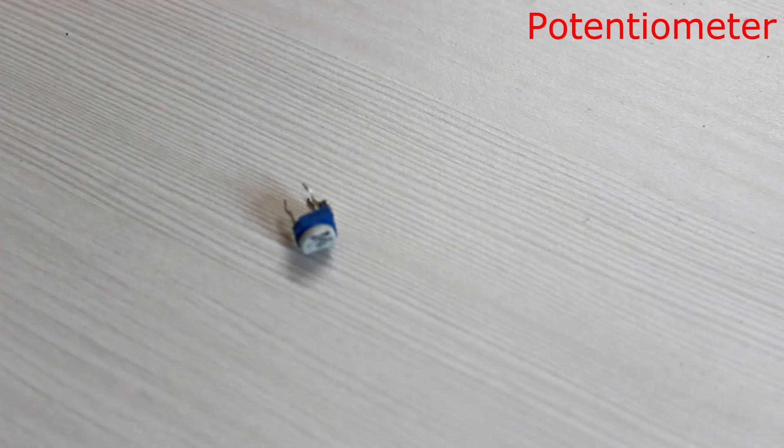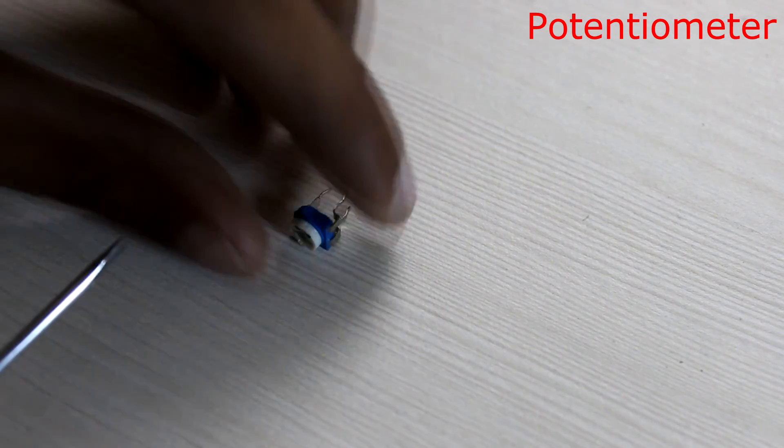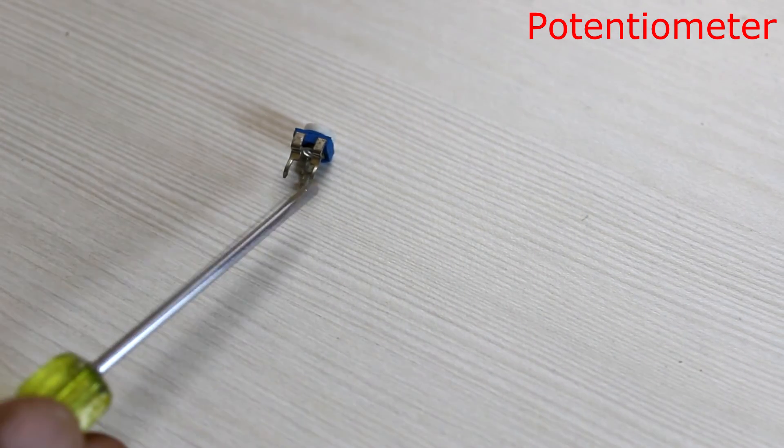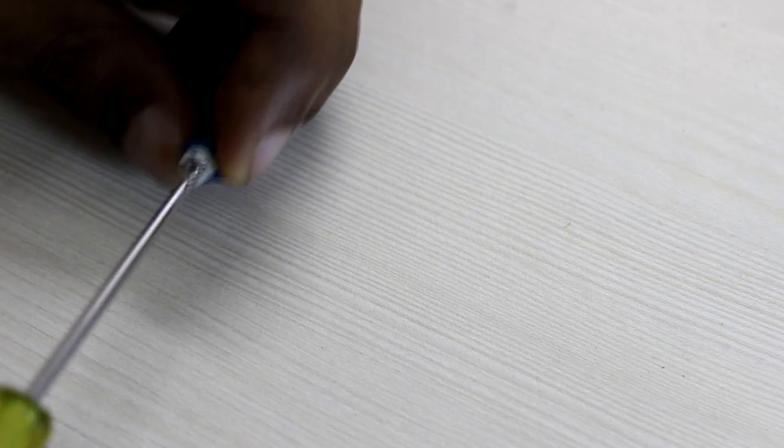This is a 10 kilo ohm potentiometer. Which means that the resistance across the first and third terminals of the potentiometer is 10 kilo ohm. It has a knob on the top which can be turned by using a screwdriver.